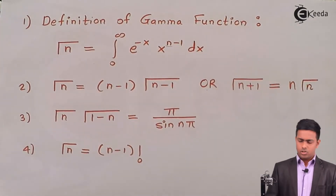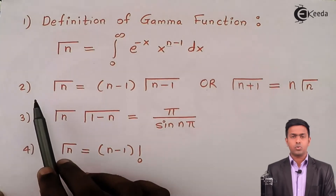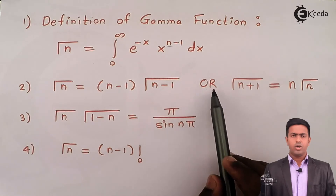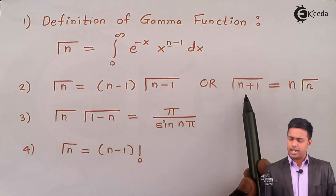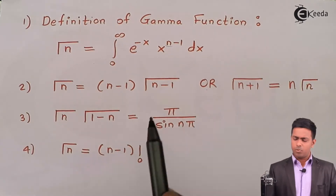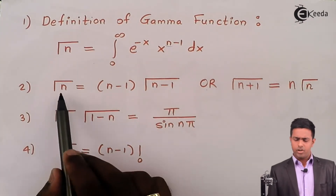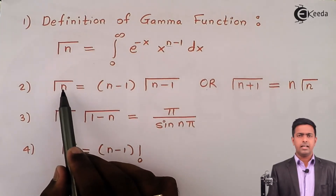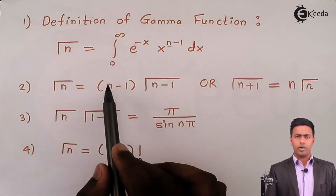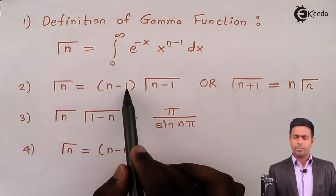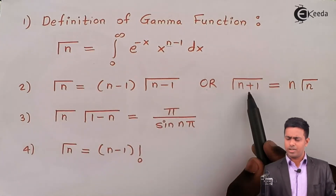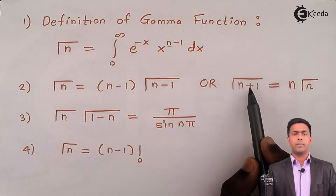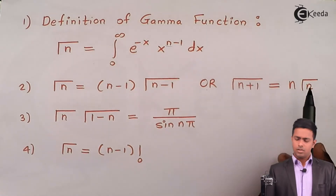On your screen we have the properties of gamma function. Observe property number 2: it says gamma(n) = (n-1) * gamma(n-1), or equivalently gamma(n+1) = n * gamma(n). Both forms are the same — when the value inside gamma is n, on the right-hand side we subtract 1, giving (n-1) * gamma(n-1). In the second form, inside gamma we have n+1, so subtracting 1 gives n, hence n * gamma(n).